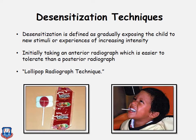Desensitization is defined as gradually exposing the child to new stimuli or experiences of increasing intensity. Initially, the radiograph of the anterior teeth is taken, which is easier than the posterior. A lollipop radiograph technique involves tying a radiographic film to a lollipop with a rubber band. The patient bites on the lollipop, which helps position the radiograph in the patient's oral cavity.